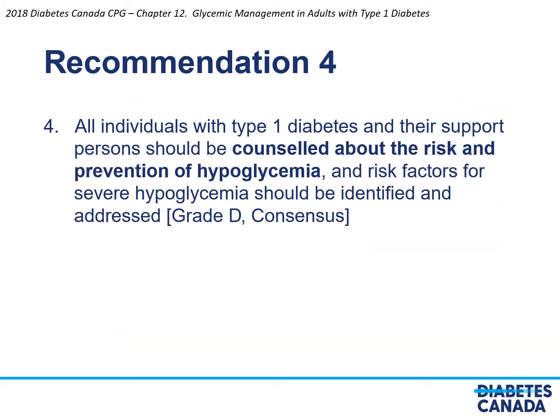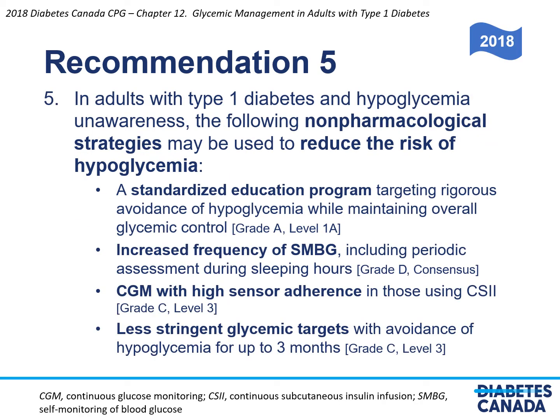Recommendation 4: All individuals with type 1 diabetes and their support persons should be counseled about the risk and prevention of hypoglycemia, and risk factors for severe hypoglycemia should be identified and addressed. Recommendation 5: In adults with type 1 diabetes and hypoglycemia unawareness, the following non-pharmacological strategies may be used to reduce the risk of hypoglycemia: (1) a standardized education program targeting rigorous avoidance of hypoglycemia while maintaining glycemic control; (2) increased frequency of SMBG including periodic assessment during sleeping hours; (3) CGM with high sensor adherence in those using CSII; and (4) less stringent glycemic targets with avoidance of hypoglycemia for up to 3 months.